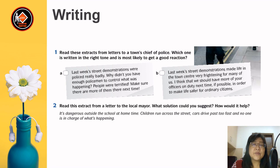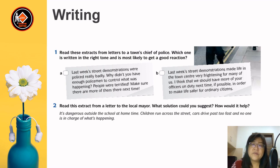Now read this extract from letters to a town chief of police. Which one is written in the right tone and is most likely to get a good reaction? Letter A: 'Last week's street demonstrations were policed really badly. Why didn't you have enough policemen to control what was happening? People were terrified. Make sure there are more of them there next time.' Letter B: 'Last week's street demonstrations made life in the town centre very frightening for many of us. I think that we should have more of your officers on duty next time, if possible, in order to make life safer for ordinary citizens.' The answer is B.